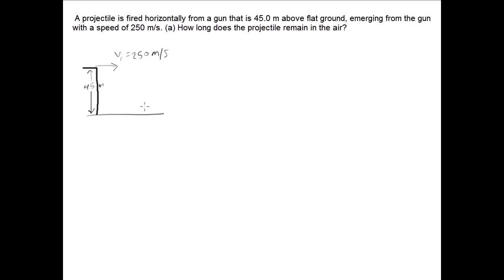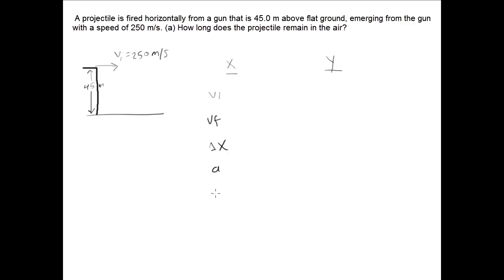The question begins by asking us how long the projectile remains in the air. Now for all projectile motion questions, what you want to do is divide the motion into two distinct directions, because the particle will be moving in both the x and the y direction. What I like to do is label the five parameters for each direction. Those five parameters are going to be the initial speed, the final speed, the displacement, the acceleration, and the time.